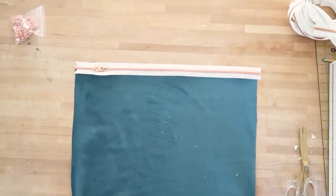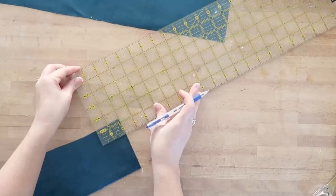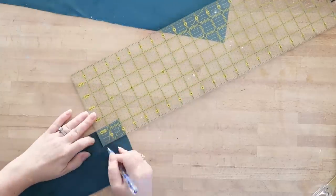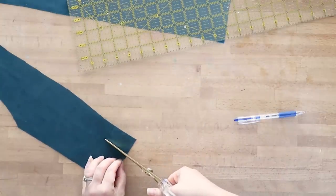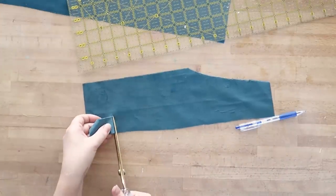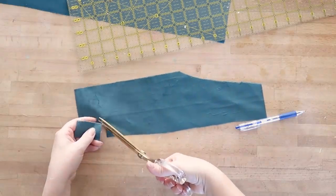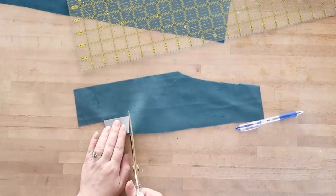Next, make sure to cut the zipper to match the length of your pillowcase. So in my case, mine are 20 by 20. Next, you're going to create some pillow stops out of extra fabric. So I just cut two rectangles out of my fabric that were two inches long by one inch high.